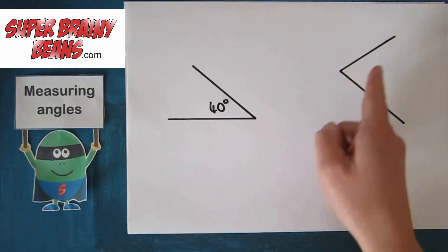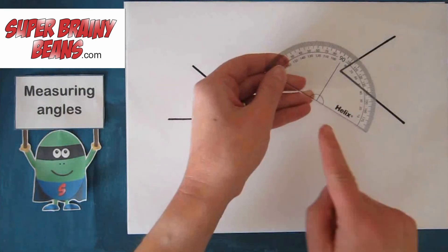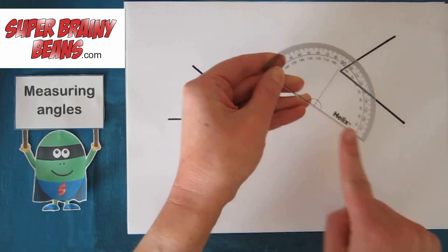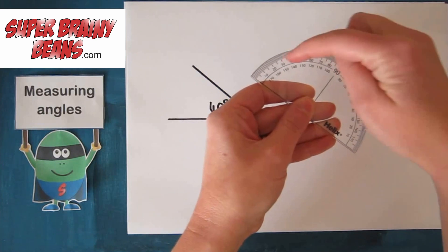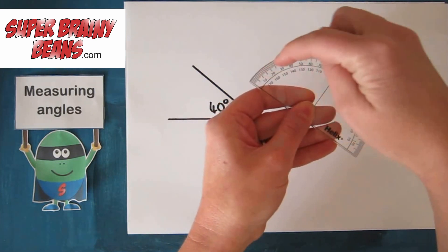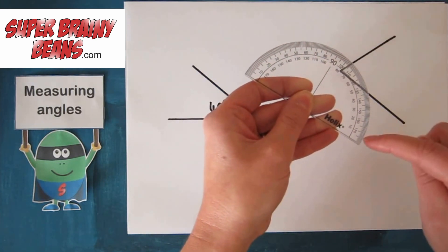Now this angle here is the other way around. So we can use a protractor, we can use this side this time. But be careful, the numbers up here go up. So 10, 20, 30, 40, up to 180.